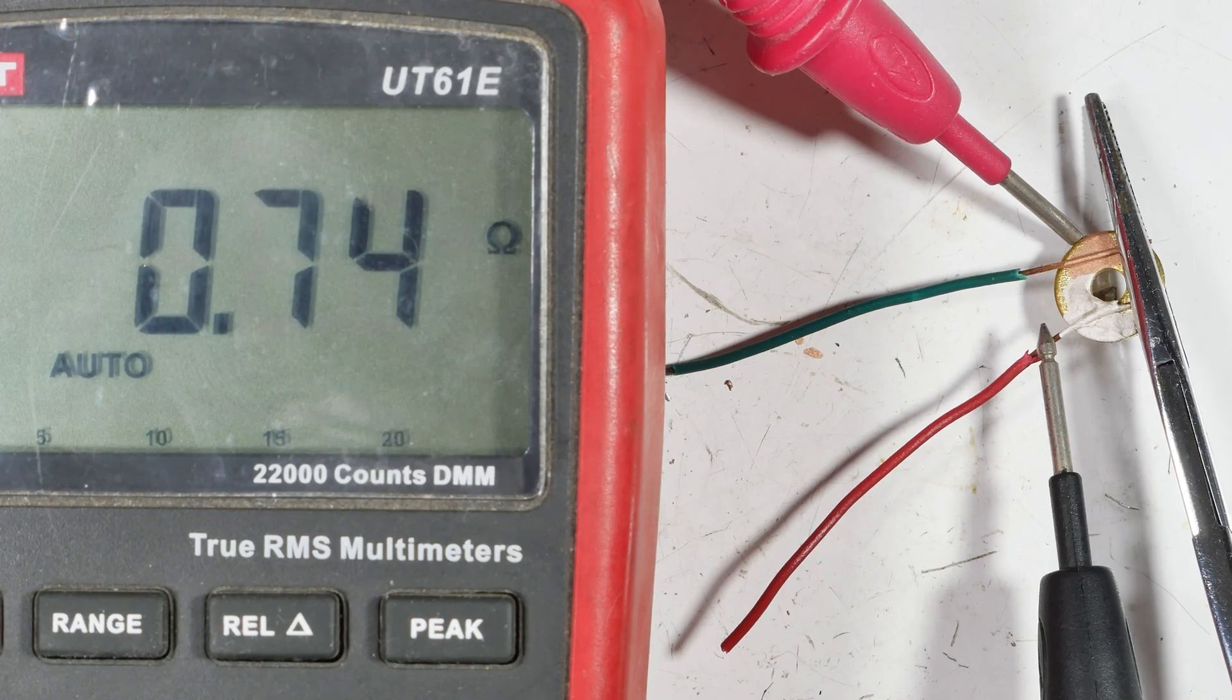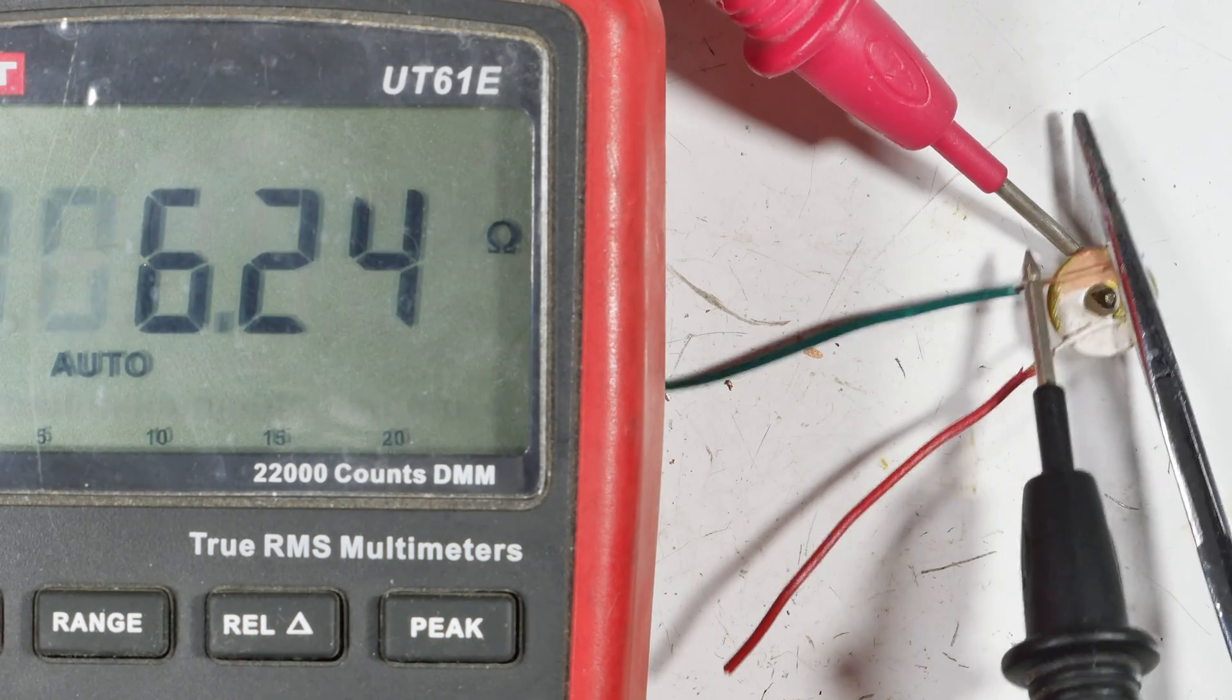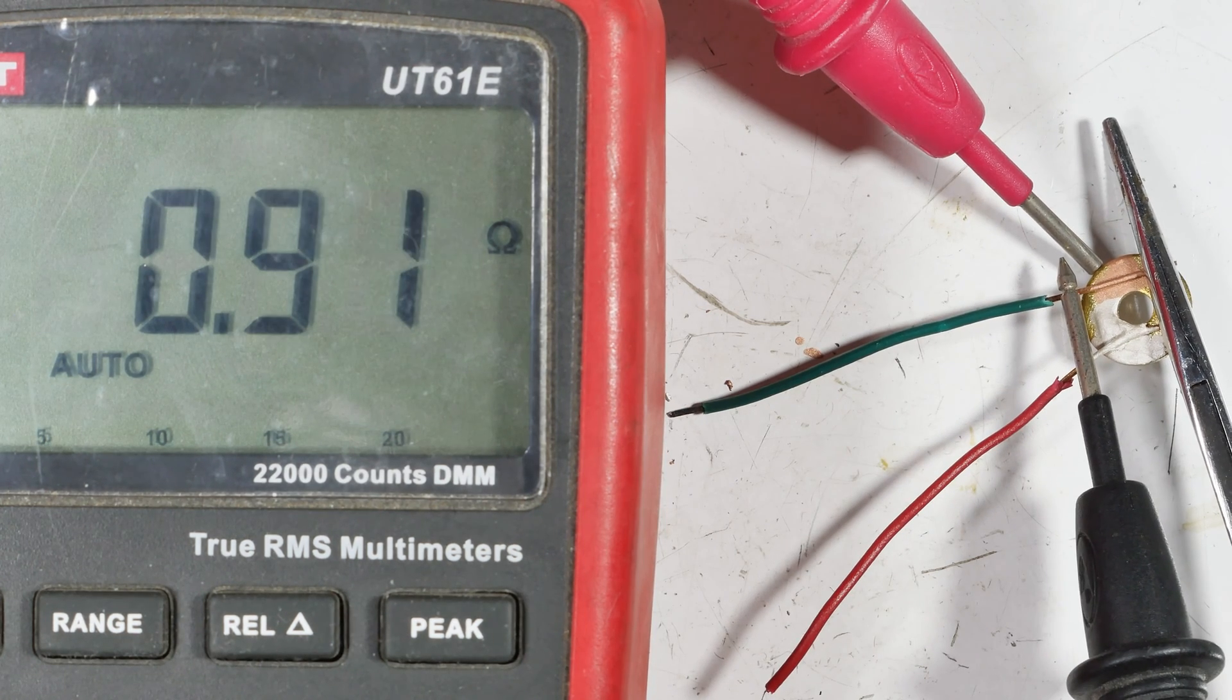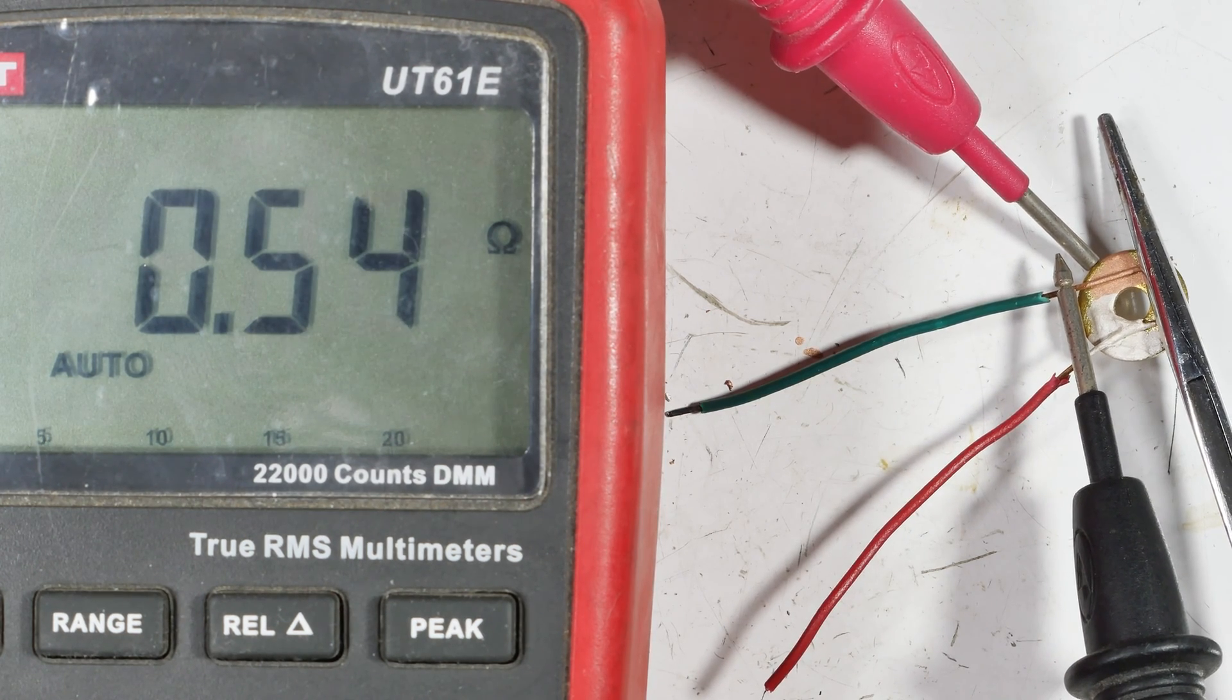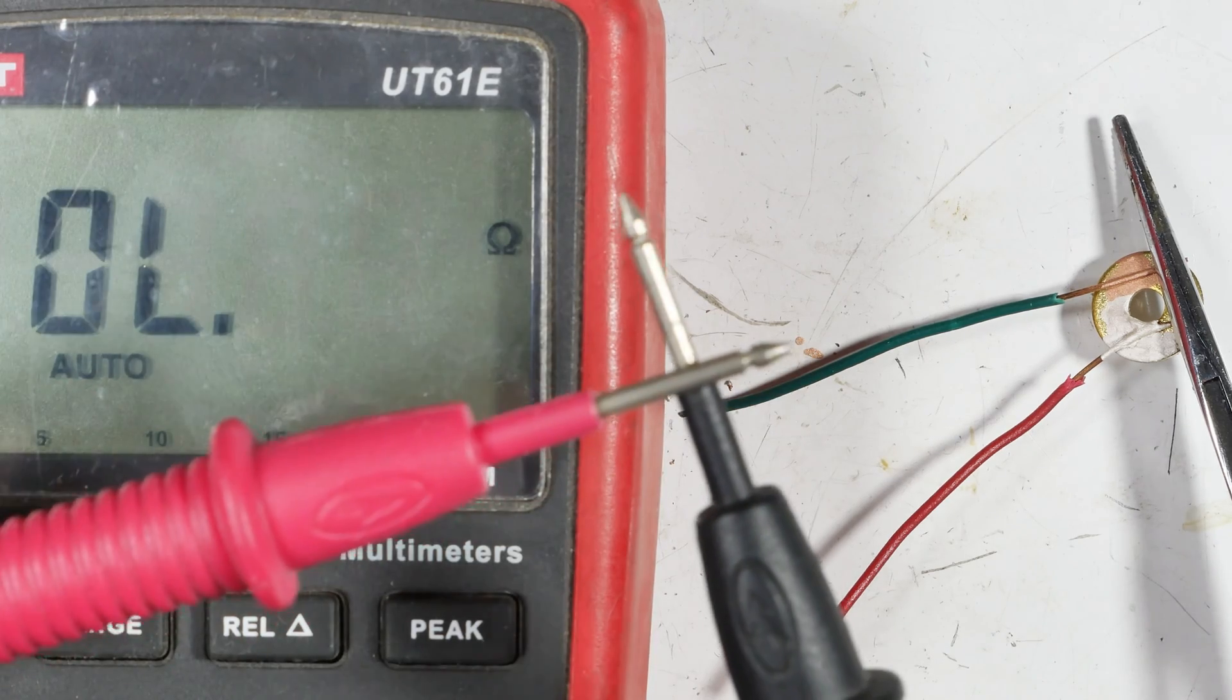Yeah, call it 0.6 something. So hardly a perfect connection. Well, all over the map, 0.5 something. So a little higher resistance than just a short across the things, but I guess not too terrible.